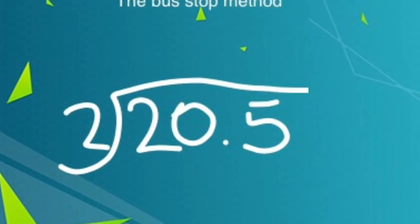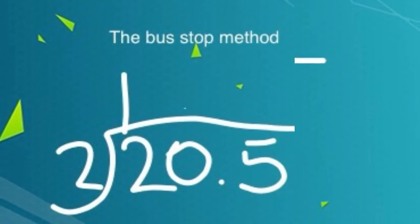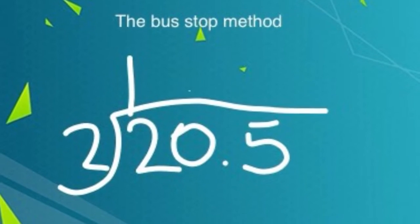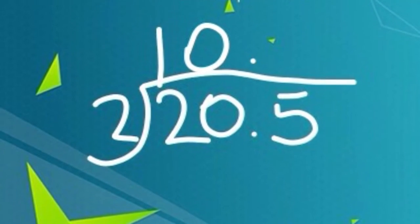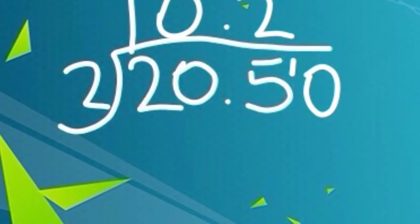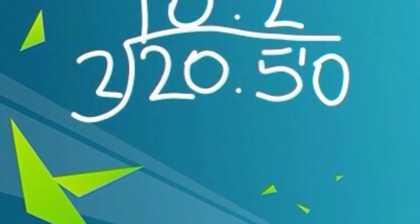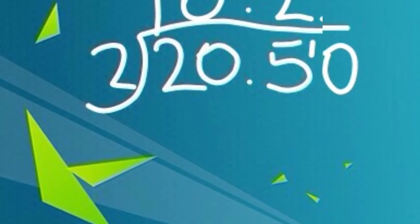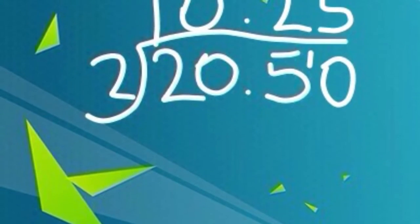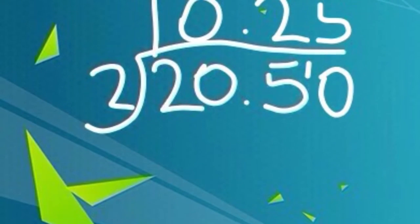Part 3, the bus stop method. 2 divided by 2 equals 1. 2 divided by 2 equals 1. 0 divided by 2 equals 0. 5 divided by 2 equals 2 remainder 1. 10 divided by 2 equals 5. The answer is 10.25.